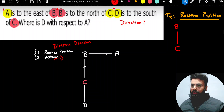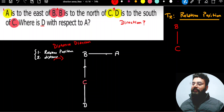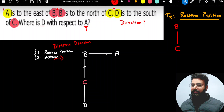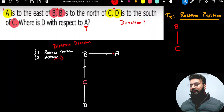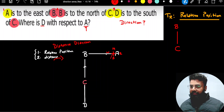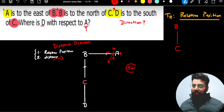Let's go back to the question. The question asks: where is point D with respect to point A? A is the reference, so I'll stand at A and look at D. To make your life easy, you can create a small plus sign indicating the four basic directions — N, E, S, W. When you look at D from A, you realize it is somewhere in between south and west. Therefore, the answer to this question is south-west.